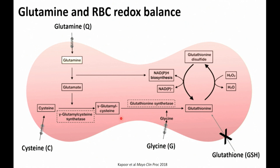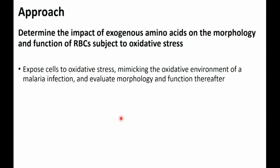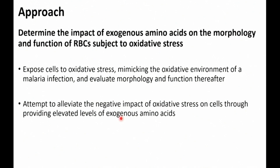Going back to why glutamine is used in sickle cell, we looked at what the red blood cell actually does with it. The red blood cell doesn't have a nucleus, but it does take up amino acids including glutamine, glycine, and cysteine, and can use them to produce intracellular glutathione. This is something the red blood cell can use to combat oxidative stress — the underlying idea behind using glutamine as a treatment for sickle cell disease. Our approach was to expose cells to oxidative stress to mimic the oxidative environment of a malaria infection, evaluate morphology and function thereafter, and then attempt to alleviate the negative impact by providing elevated levels of exogenous amino acids.